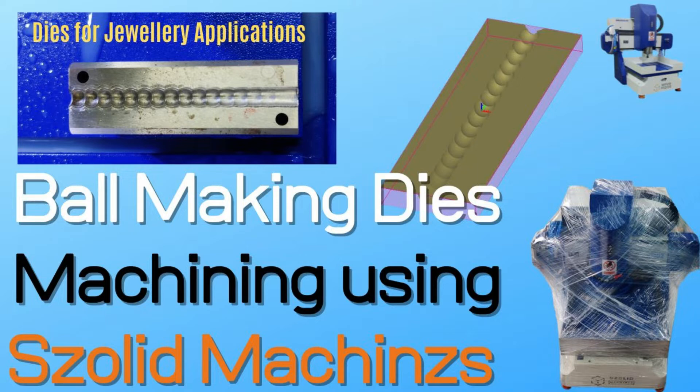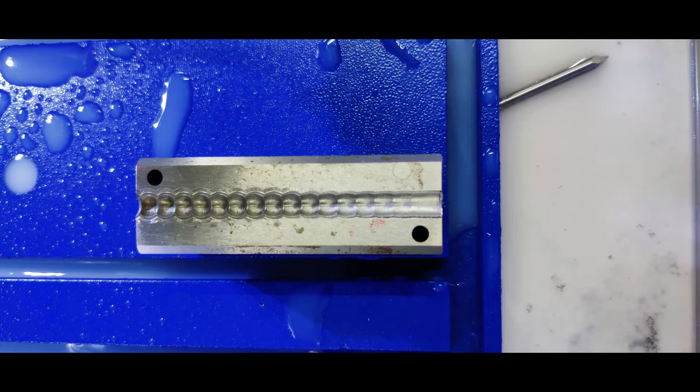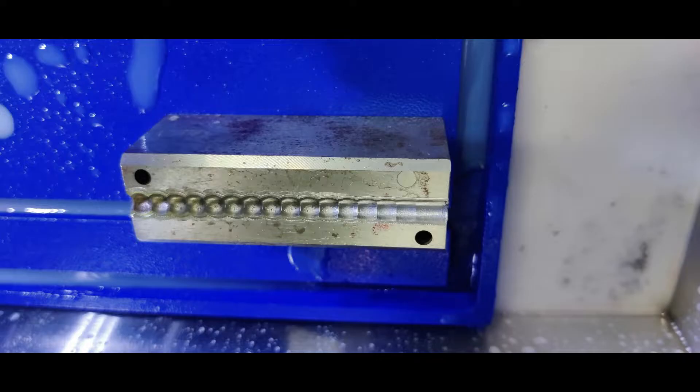Hi viewers, welcome back to CNC Router CAD CAM YouTube channel. In today's video, I am going to explain about a die making machine, the die which is used for ball making in jewelry industries. So this is the die picture. You can see this is the kind of die we have to machine.